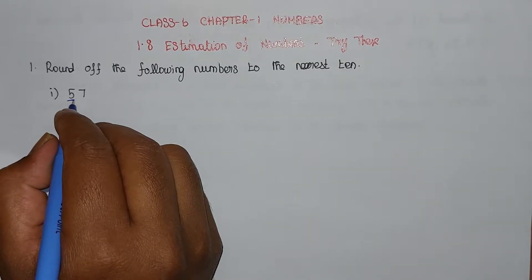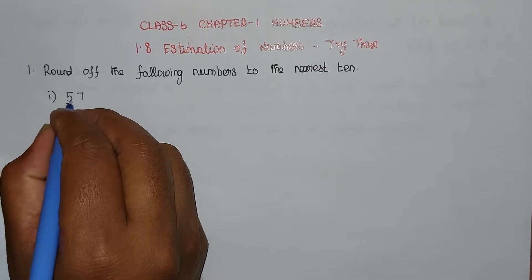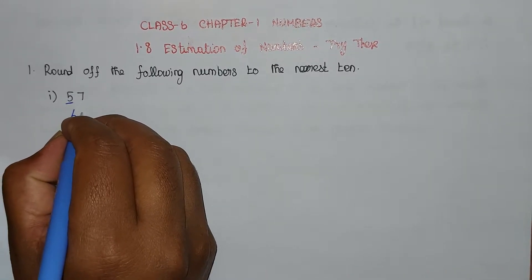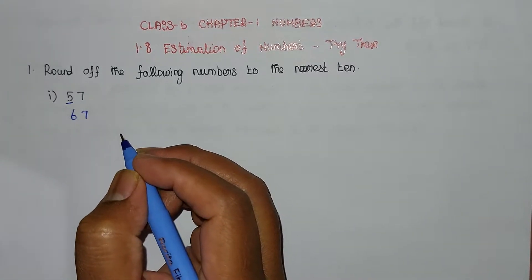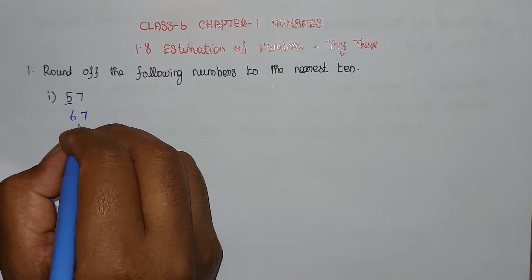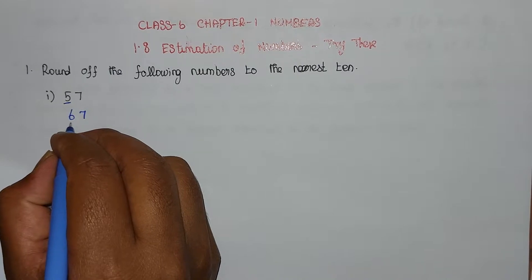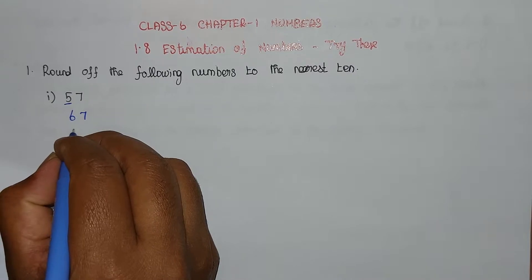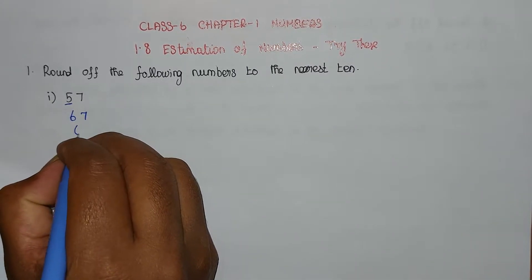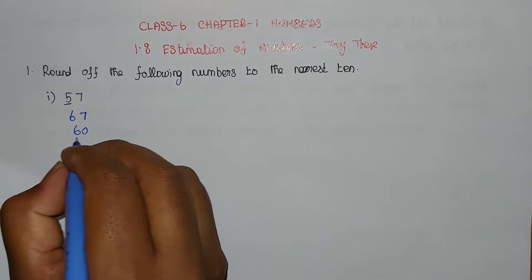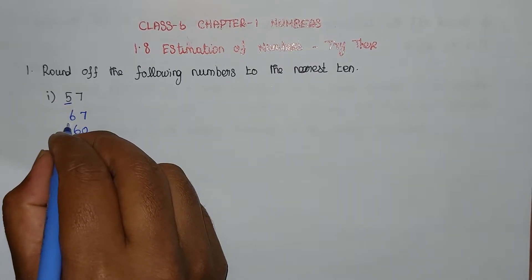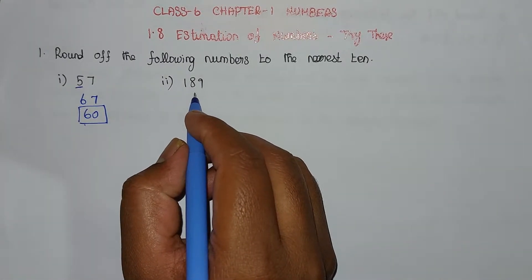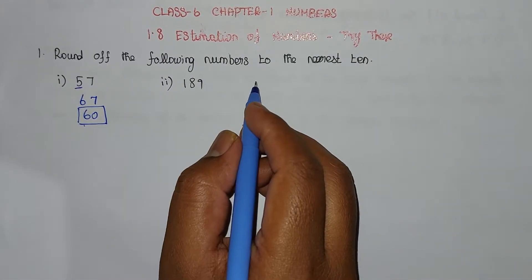If the ones digit is greater than 5, add plus 1 to the 10s place. This gives the rounded answer. Problem 2: find the nearest 10 value.